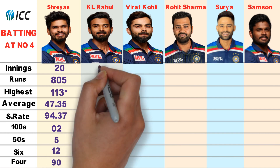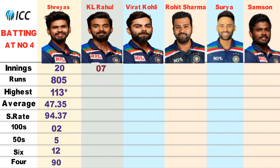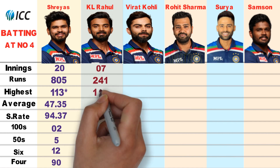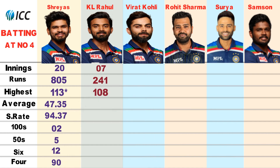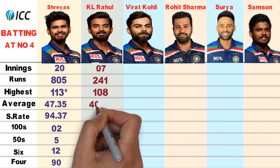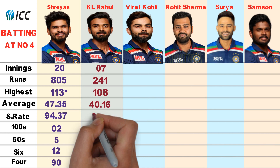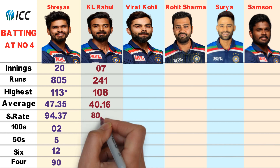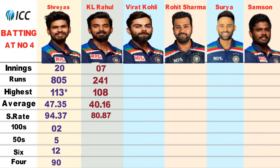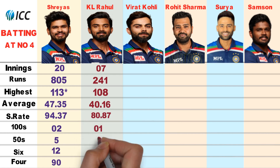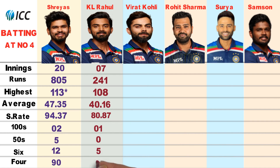KL Rahul played 7 innings, scoring 241 runs with a highest score of 108. Batting average 40.16, strike rate 80.87. He scored 1 century, with 5 sixes and 17 fours.